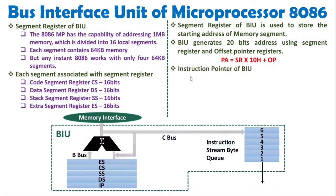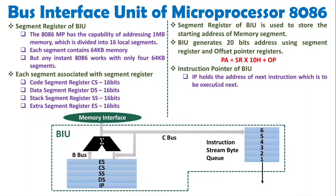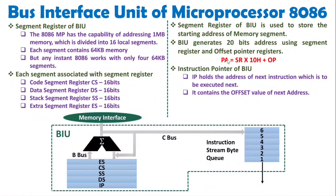The Instruction Pointer is the third essential component of the BIU. It holds the offset address of the next instruction to be executed, making it an offset pointer for the Code Segment. The physical address of the code segment is calculated as: Physical Address = Code Segment Register × 10h + IP (Instruction Pointer).